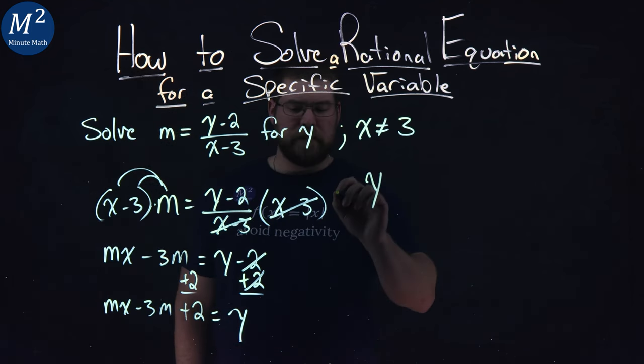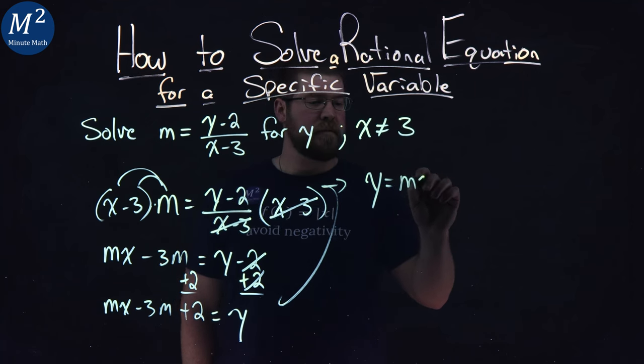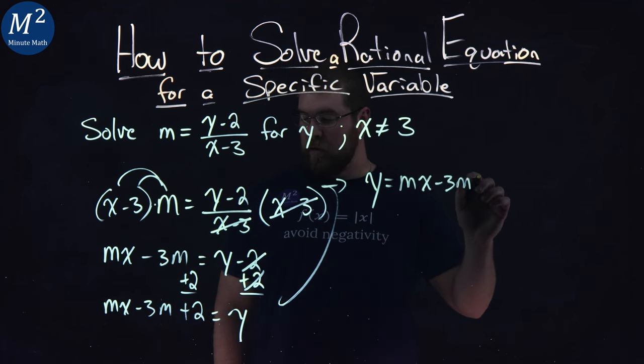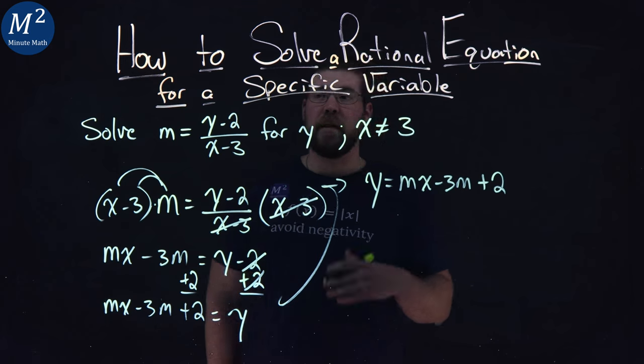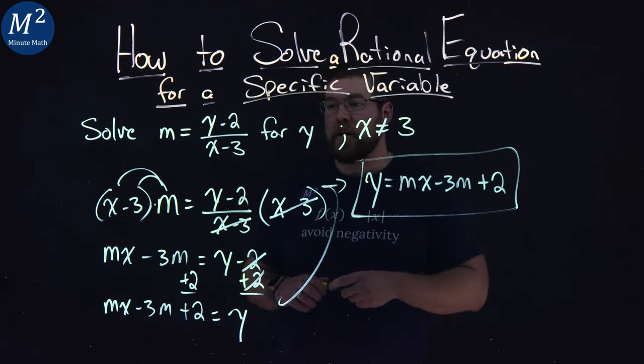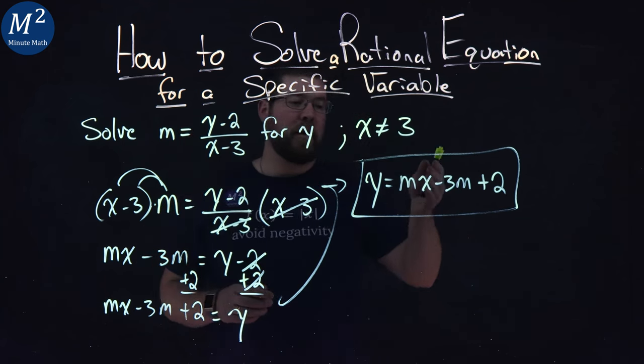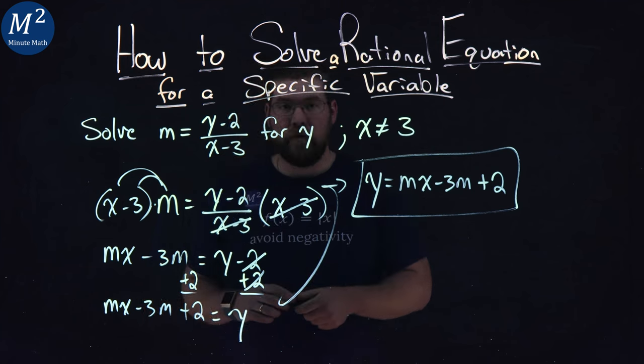So, we can rewrite it to have y by itself. We have y equals mx minus 3m plus 2. And there we have it. We have solved this rational equation with multiple variables to get y by itself. And we got y equals mx plus 3m plus 2.